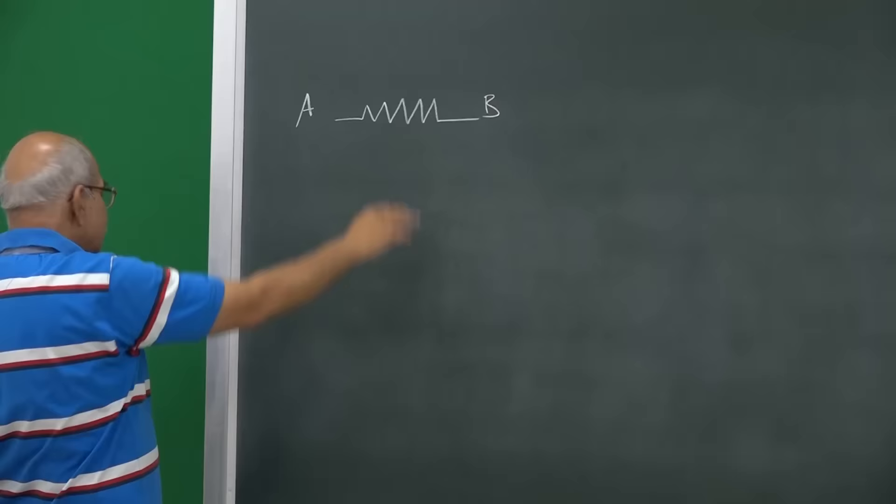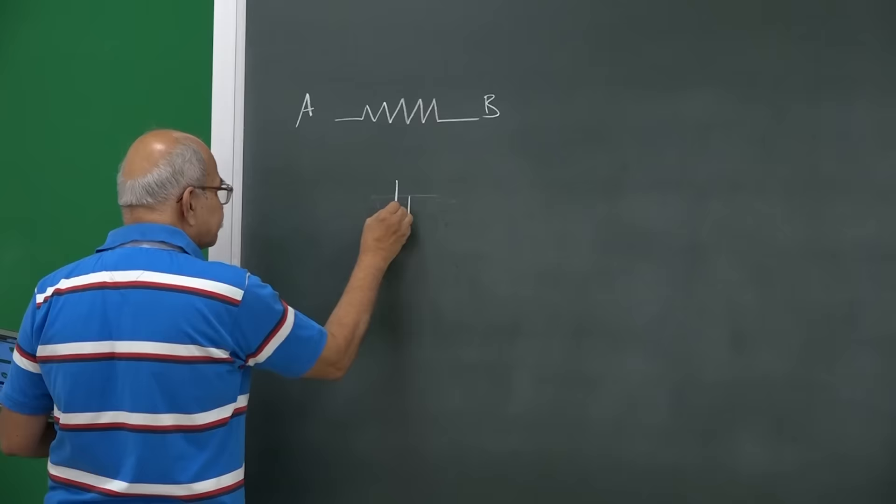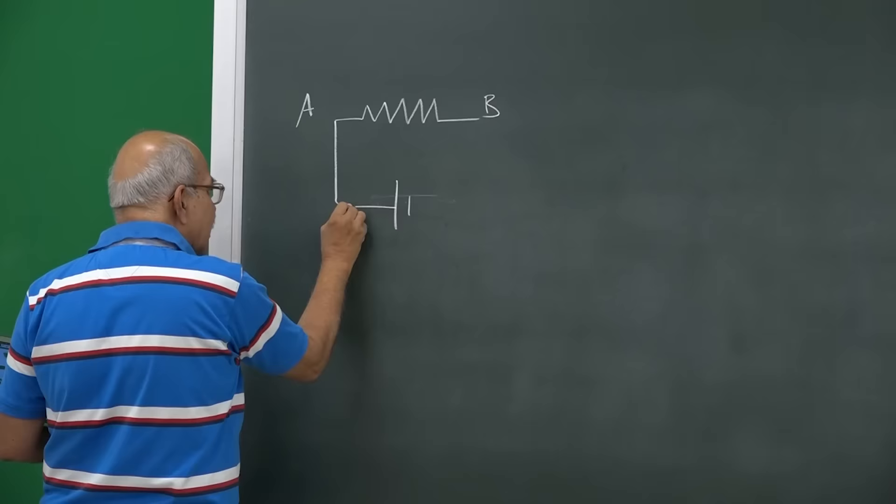When a resistance AB is added through a conducting wire across a battery, we have a battery, let me write the symbol battery, and then there is a conducting wire. This is a conducting wire and then it is added here like this.